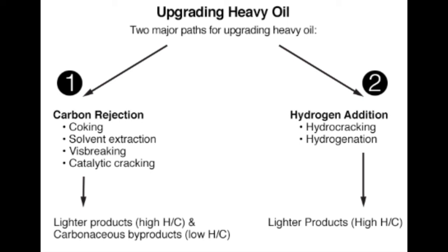Hydrogen addition also leads to lighter products with higher hydrogen-to-carbon ratio, as with carbon rejection. But in this case, there is no rejection of carbon or losing part of your feedstock as a low-value or waste product, so you have higher yields of the desirable lighter products. The disadvantage is that hydrogen is expensive to produce, and the catalysts used in hydrocracking and hydrogenation processes are also expensive — so higher yields, but more costly processes.